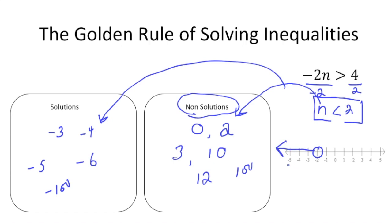Now you can see: here's negative 5 — negative 5 is a solution. Same thing with negative 6, which would be to the left of negative 5 — that's a solution. Negative 3 is a solution. So the golden rule is: when you multiply or divide both sides of an inequality by a negative, you have to flip the sign. Otherwise, you leave it just the way it is.